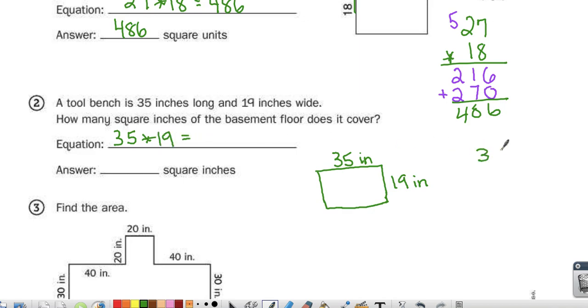I'm going to do this, 35 times 19. For this one, I'm going to do partial products. So to do partial products, I would start with 10 times 30, which equals 300. Then I would do the 10 times 5, which equals 50.